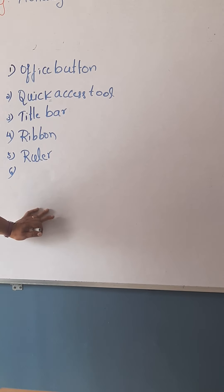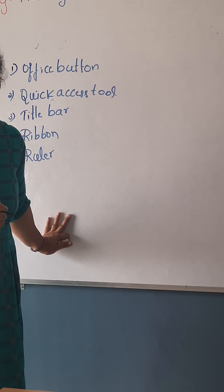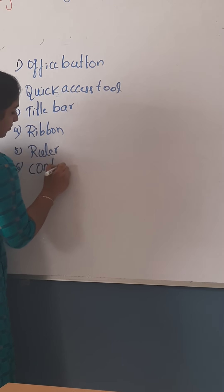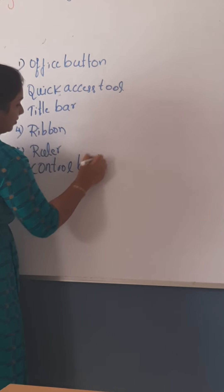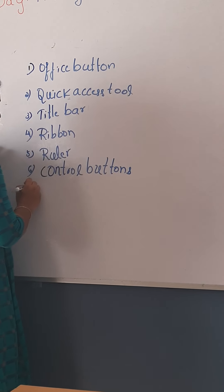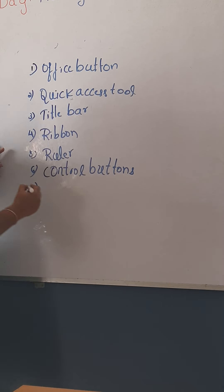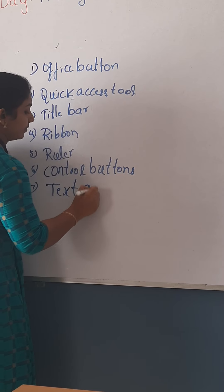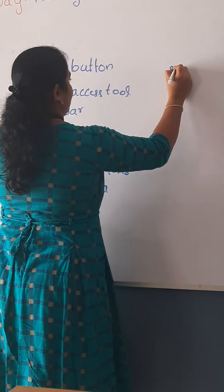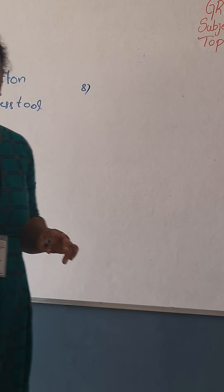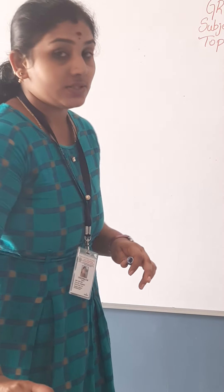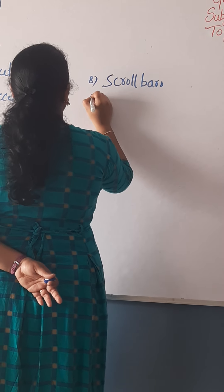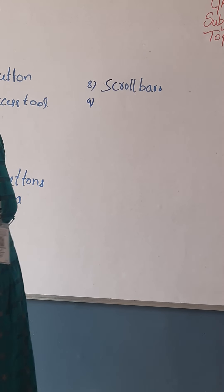The ruler will be horizontal and vertical. Then you will be having Control Buttons. Then you will have the Text Area. Then we will be having Scroll Bars — horizontal and vertical scroll bars.